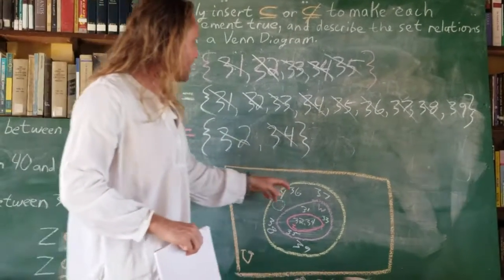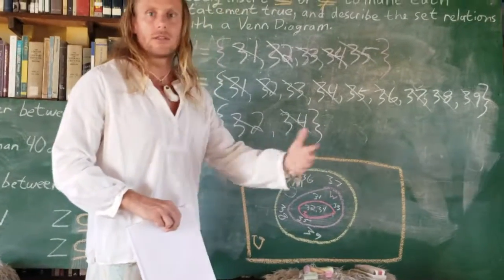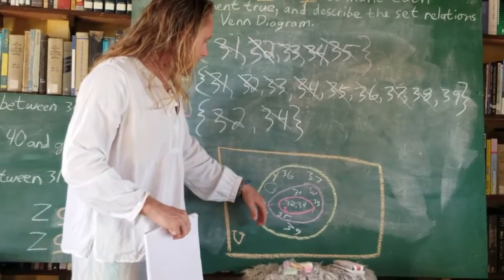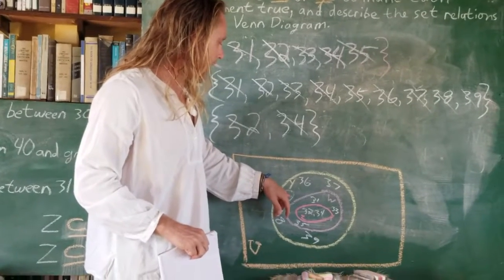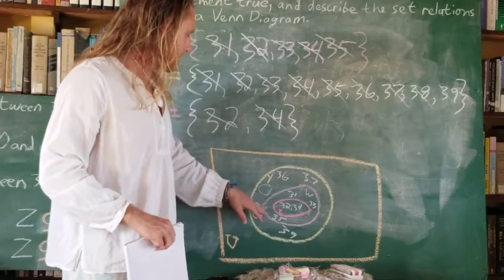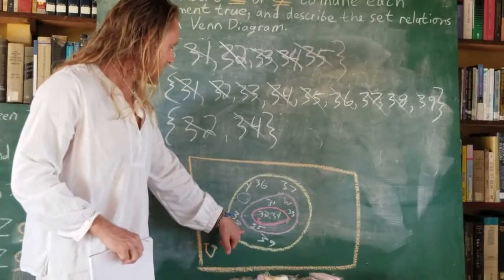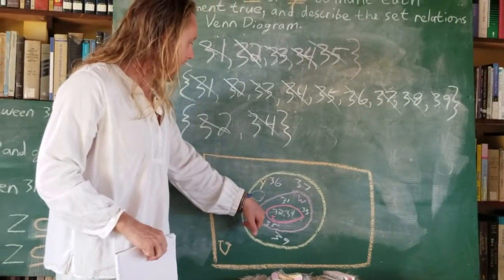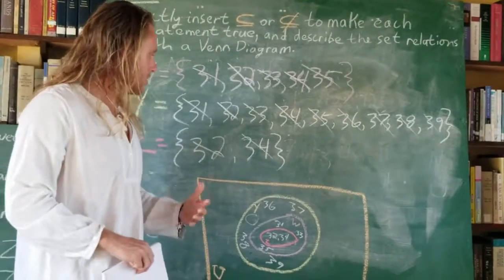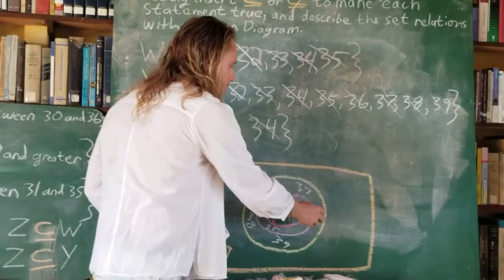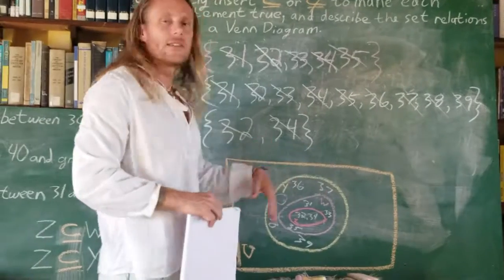There's nothing intrinsically special about where we place the elements within a set's region. We could put 38 over here, over there, up an inch, to the right half an inch. What matters is that the spot corresponds to the correct set relations — namely that 38 is an element of Y and not an element of W or Z. The position doesn't matter; the set relations are what make the difference.